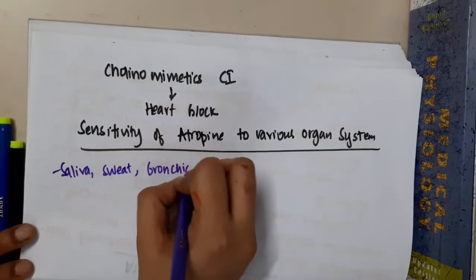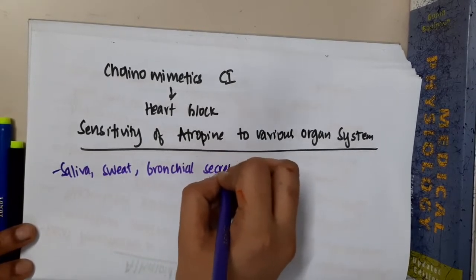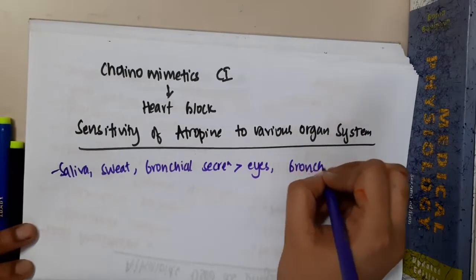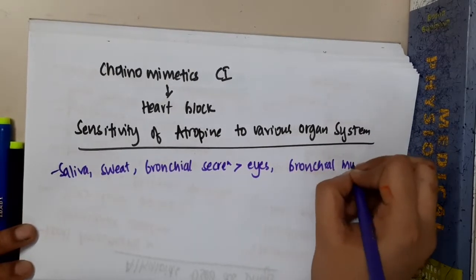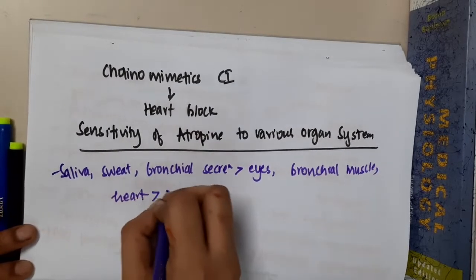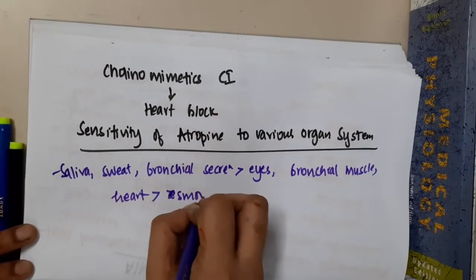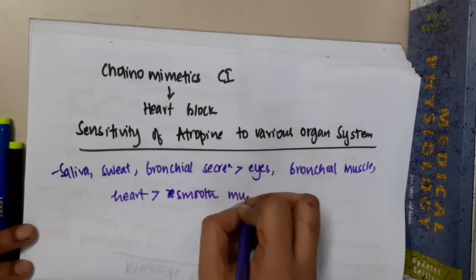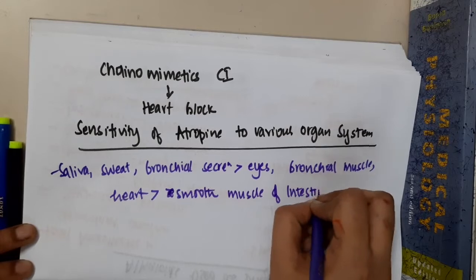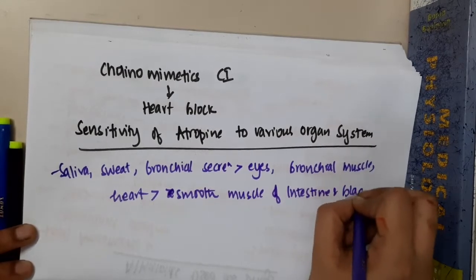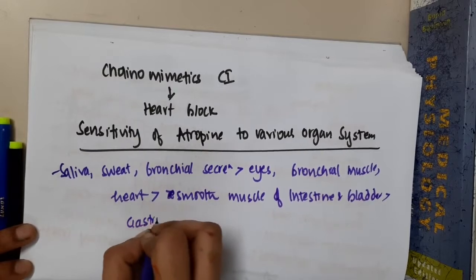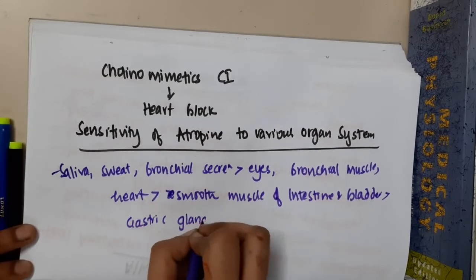The organ systems in order of atropine sensitivity are: saliva, sweat, bronchial secretions, eyes, bronchial muscles, heart, smooth muscles of intestine and bladder, followed by gastric glands and smooth muscles.